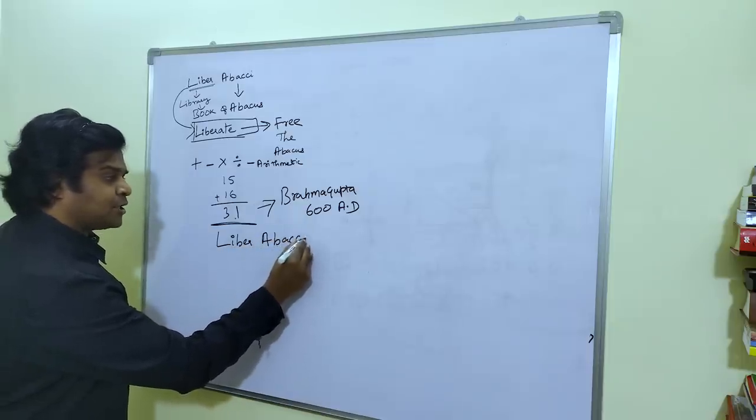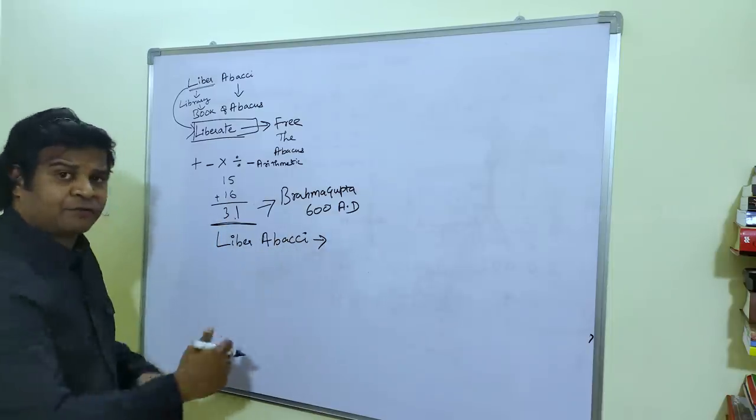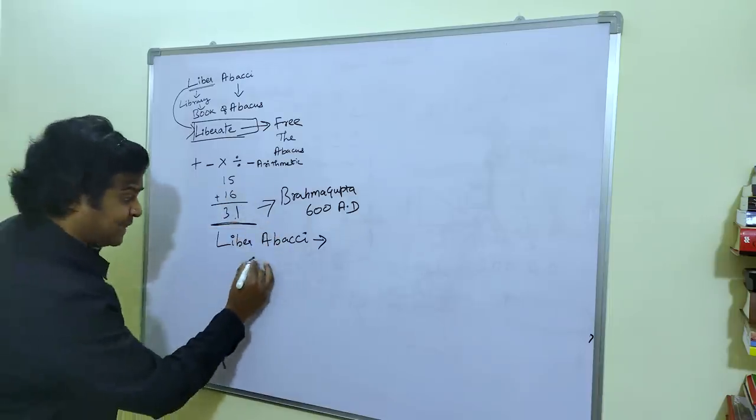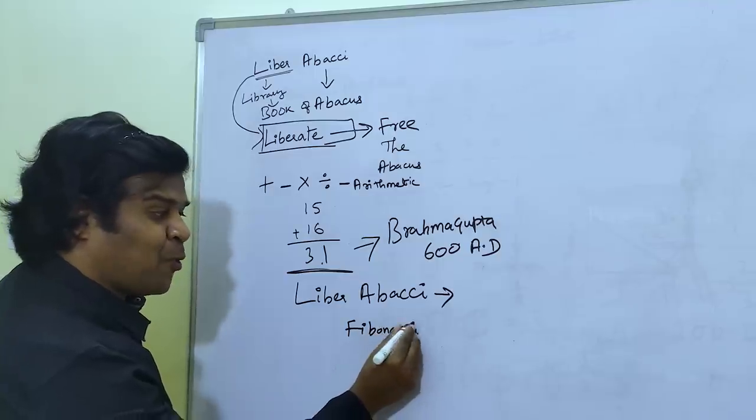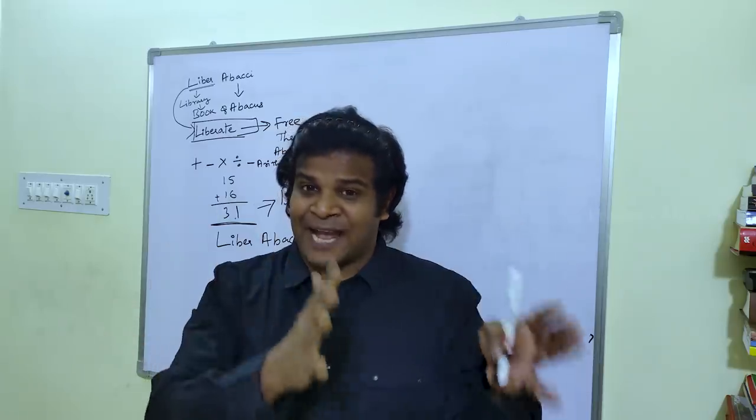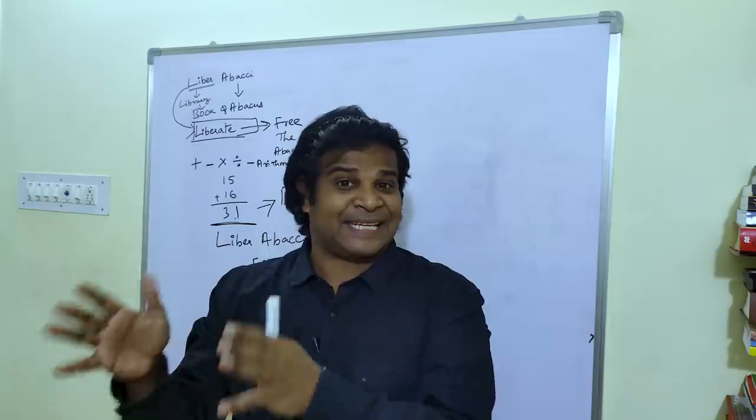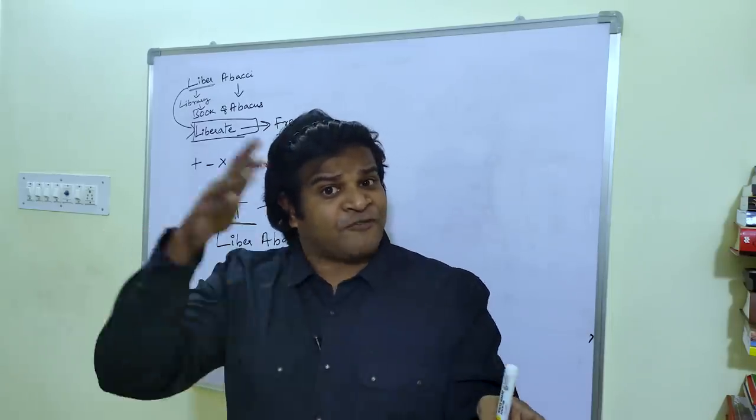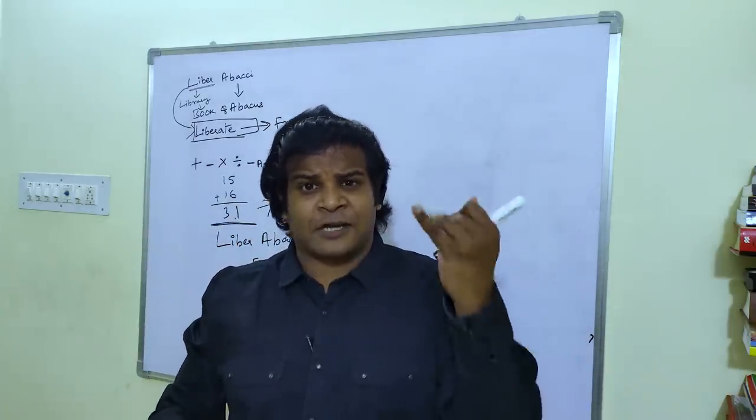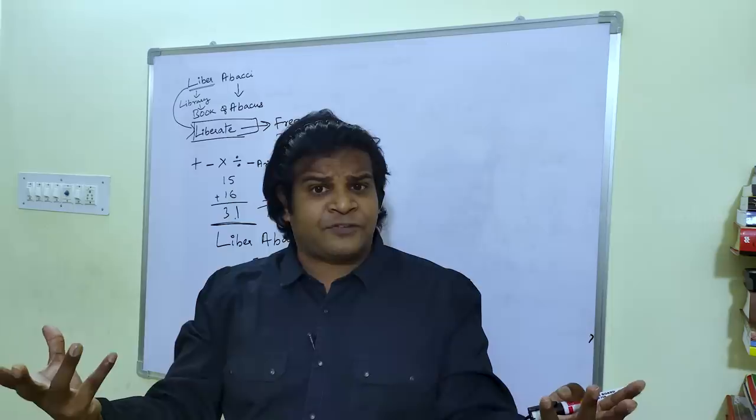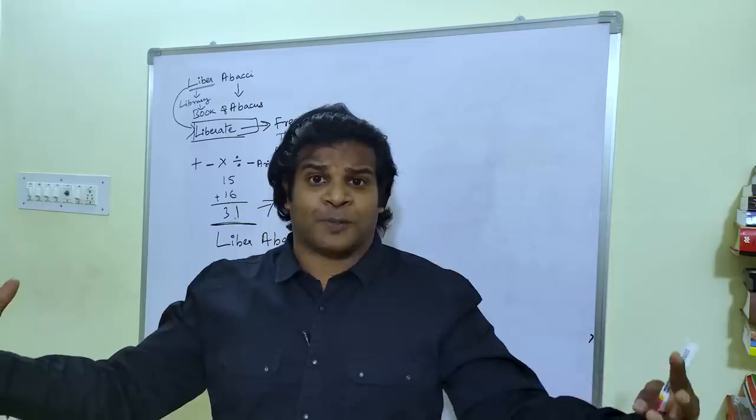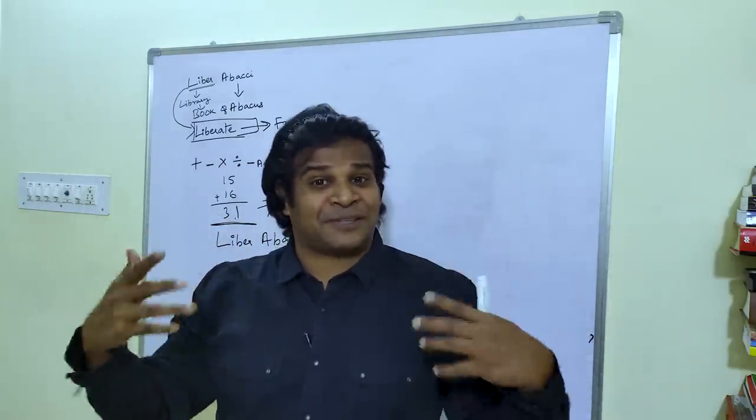Now, the Liber Abaci has many chapters which talks about various methods of Hindu calculation. This is why he called this modus indorum. And the actual Fibonacci numbers is only a small part of this. So, what happens after Fibonacci publishes this book in 1200 AD? I told you, Fibonacci was a transformative genius. He revolutionizes trade, commerce, business, banking, weights and measures, and he completely alters the system in Europe. Everybody in Europe was picking up this new method of calculation.